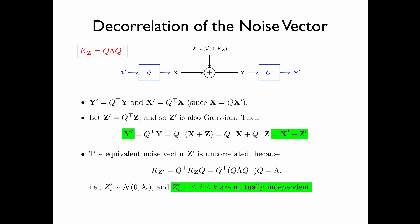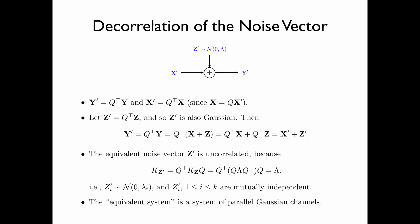Thus, for the new system, we have output y' equal to input x' plus the equivalent noise vector z', where the components of z' are mutually independent. Therefore, this new system — which we call the equivalent system — is a system of parallel Gaussian channels. In the rest of this section, we will show that the equivalent system and the original system have the same capacity.